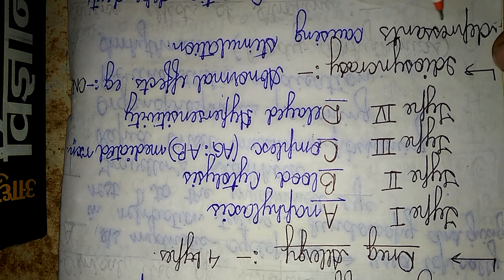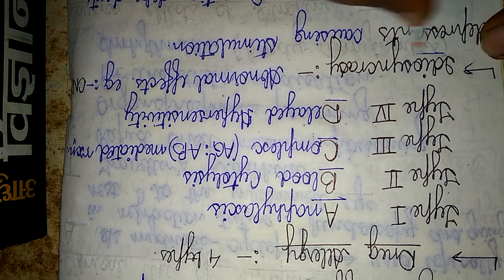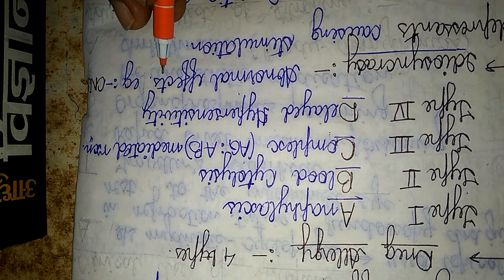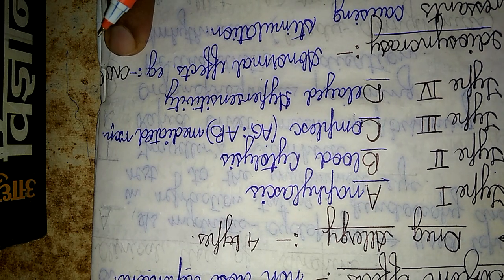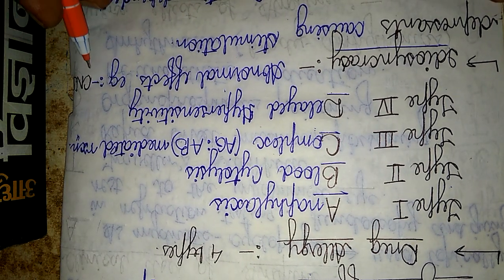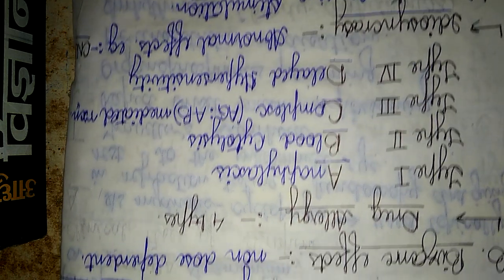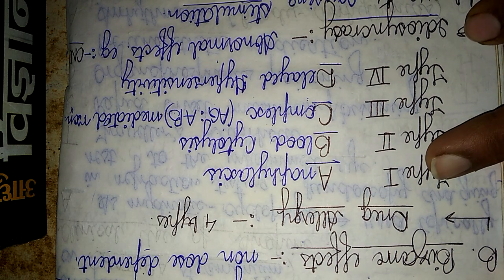Within bizarre effects, there is also the condition called idiosyncrasy. Idiosyncrasy can be defined as abnormal effects that are seen with a drug. For example, CNS depressants causing stimulation instead of depression. Idiosyncrasy is studied under bizarre effects because these are certain abnormal, unpredictable responses.